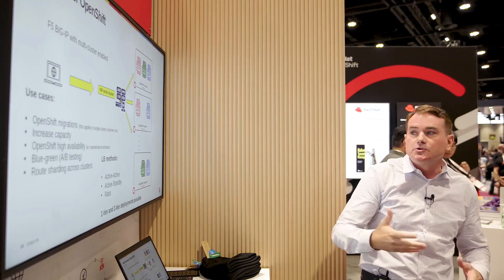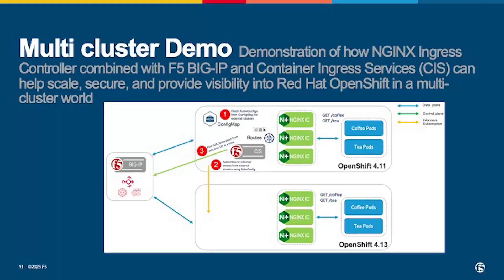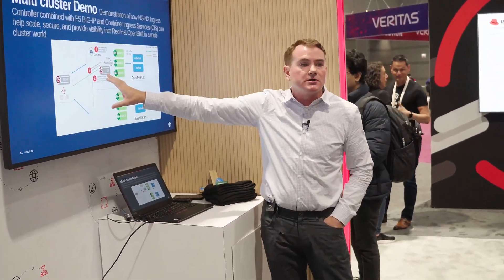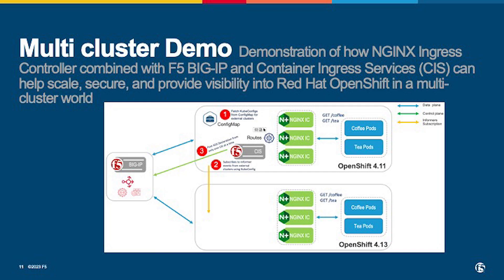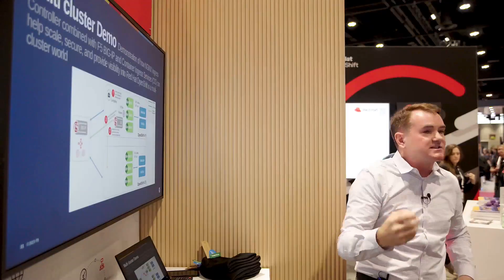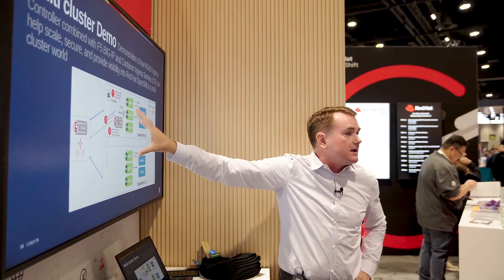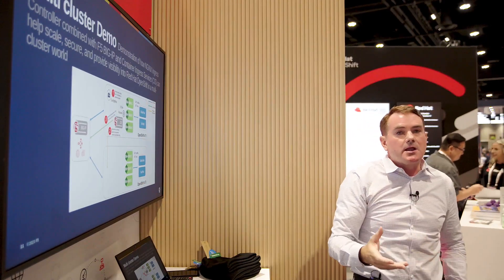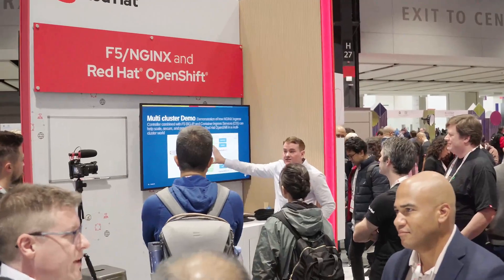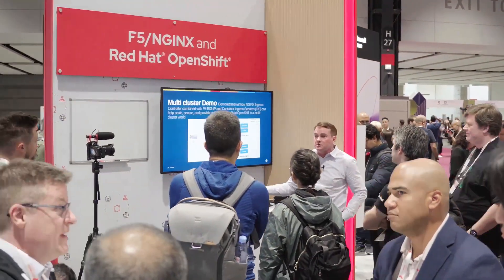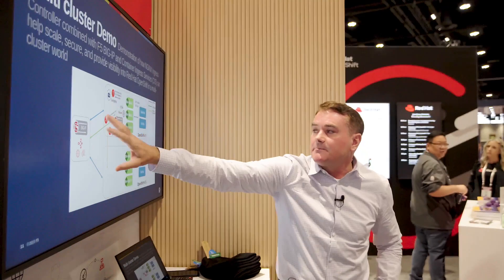A demo shows an F5 controller within OpenShift providing traffic distribution between two clusters. Nginx is used in the demo but can be replaced with HAProxy or any ingress controller. The Big IP distributes traffic to the pods — coffee and tea pods are deployed in both clusters — and you'll see traffic distribution in a weight, ratio, or simple load-balance algorithm.